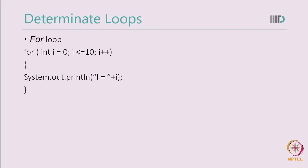The determinate loop example is the for loop. In for loop, we know how many times the loop is going to execute. For example, in this given for loop,